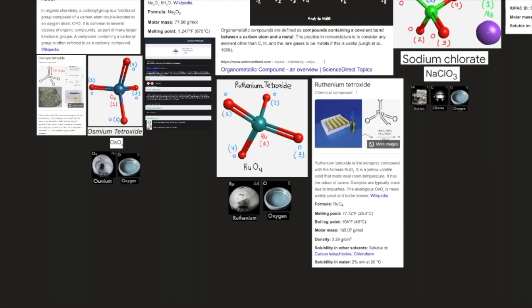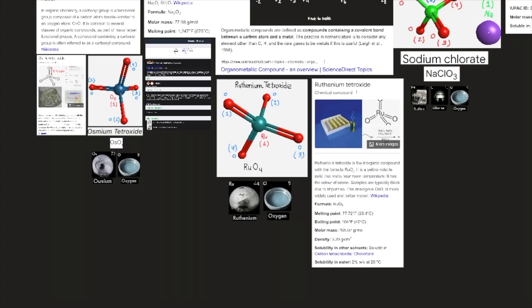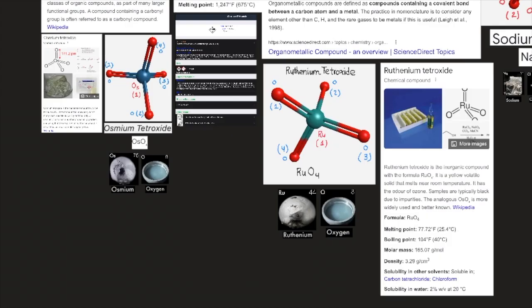Ruthenium tetroxide is the inorganic compound with the formula RuO4. It is a yellow volatile solid that melts near room temperature. It has the odor of ozone. Samples are typically black due to impurities. The analogous OsO4, seen here to the left, is more widely used and better known, according to Wikipedia. Its formula again is RuO4. One atom of ruthenium combined to four atoms of oxygen, seen here in this image. Here it is closer.